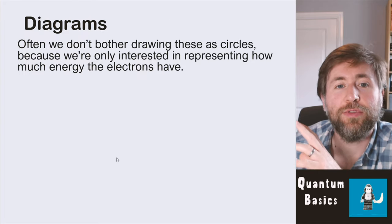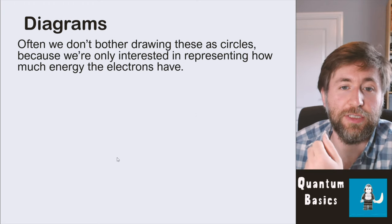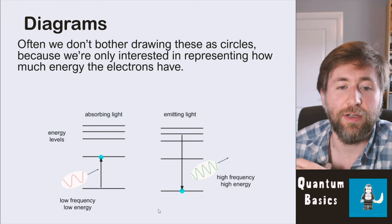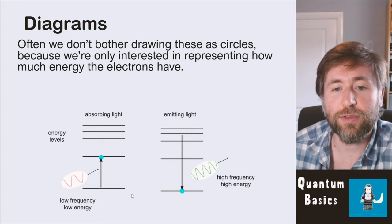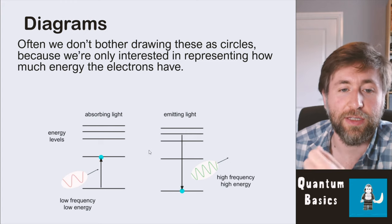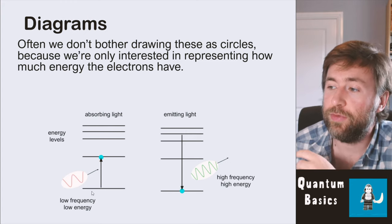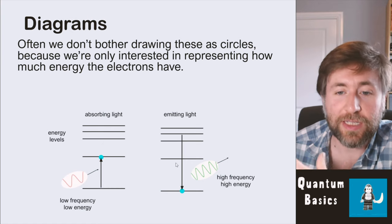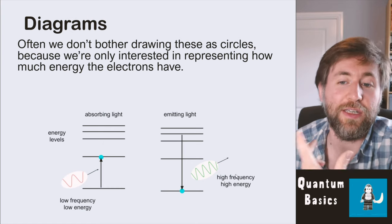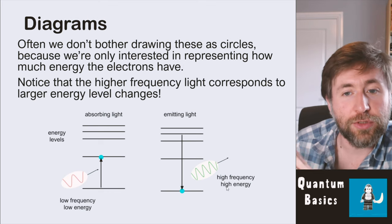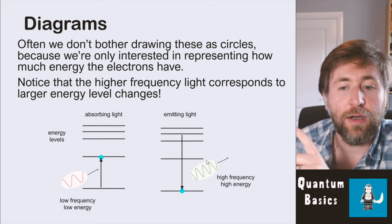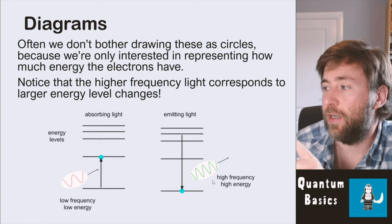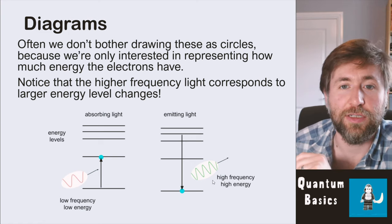Remembering we don't bother drawing circles, we just draw these simplified diagrams: the lowest energy level at the bottom, the highest energy at the top. When an electron absorbs a photon it is excited — raised up the energy level. When it de-excites, it emits a photon. Note that a higher energy level change corresponds to a higher frequency photon being emitted.